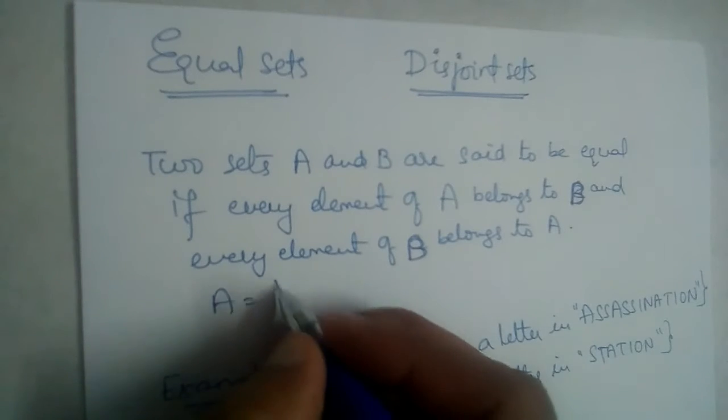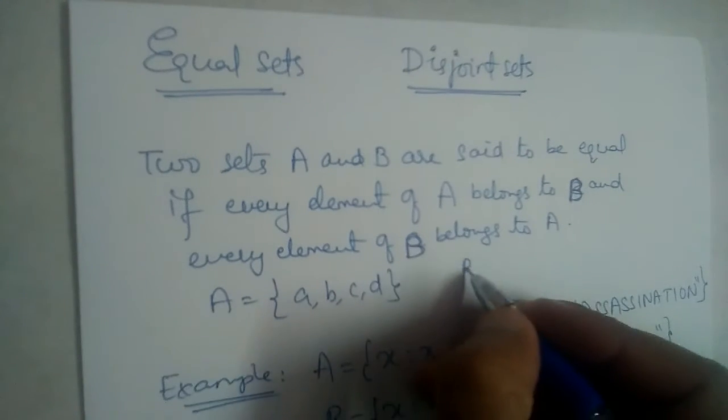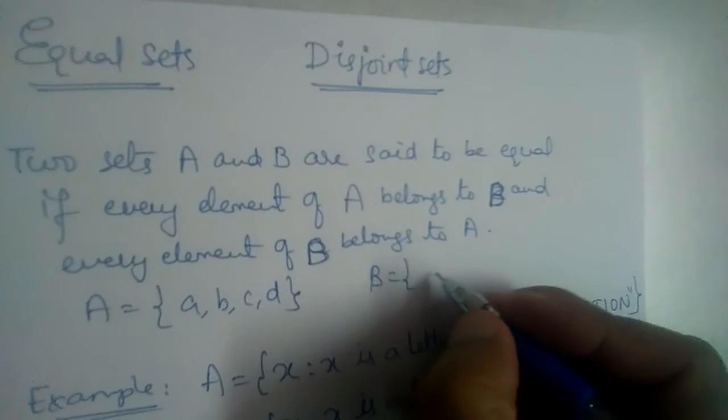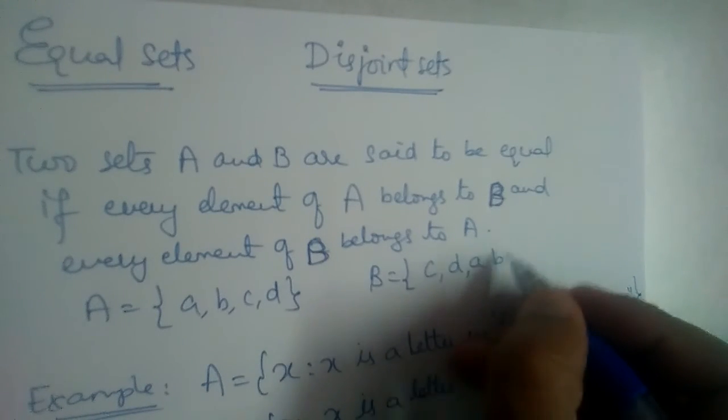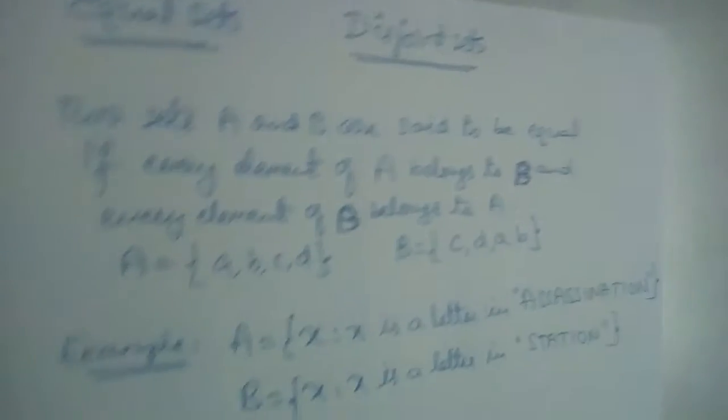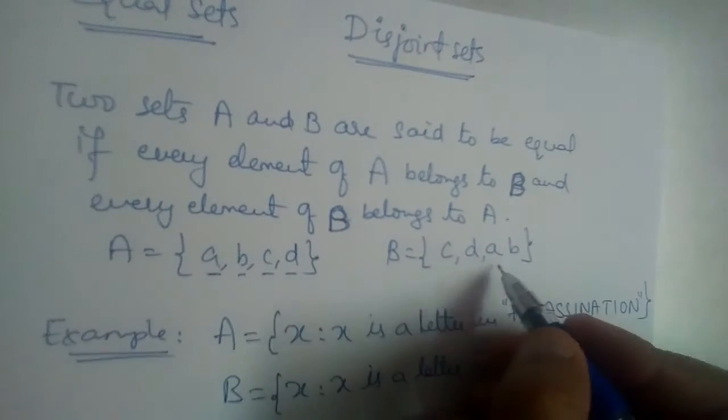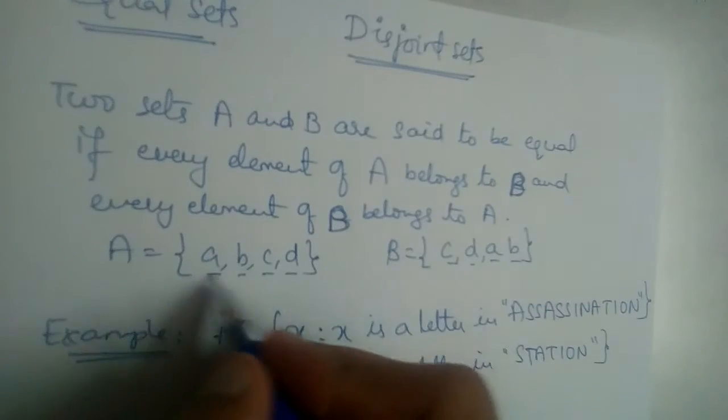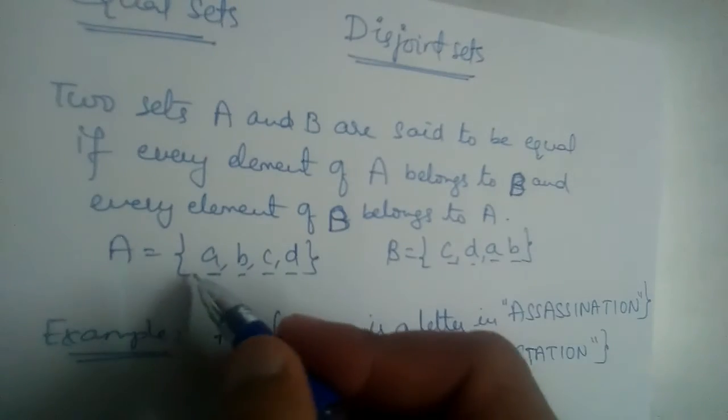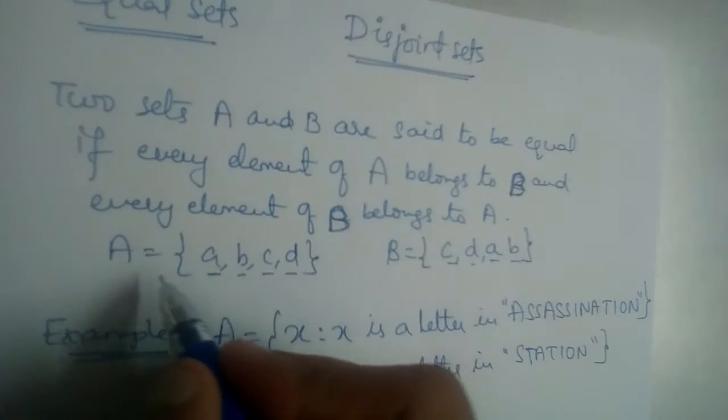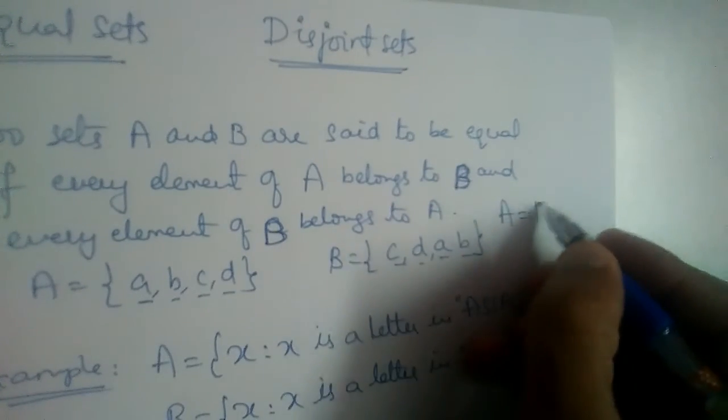For example, we have A equals A, B, C, and D, and B equals B, C, D, A, B. Order doesn't matter, right? So we have A, B, C, D here, and A, B, C, and D. Every element of set A is present in B, and every element of set B is also present in A. So A and B both are equal sets, and we write it as A equals B.